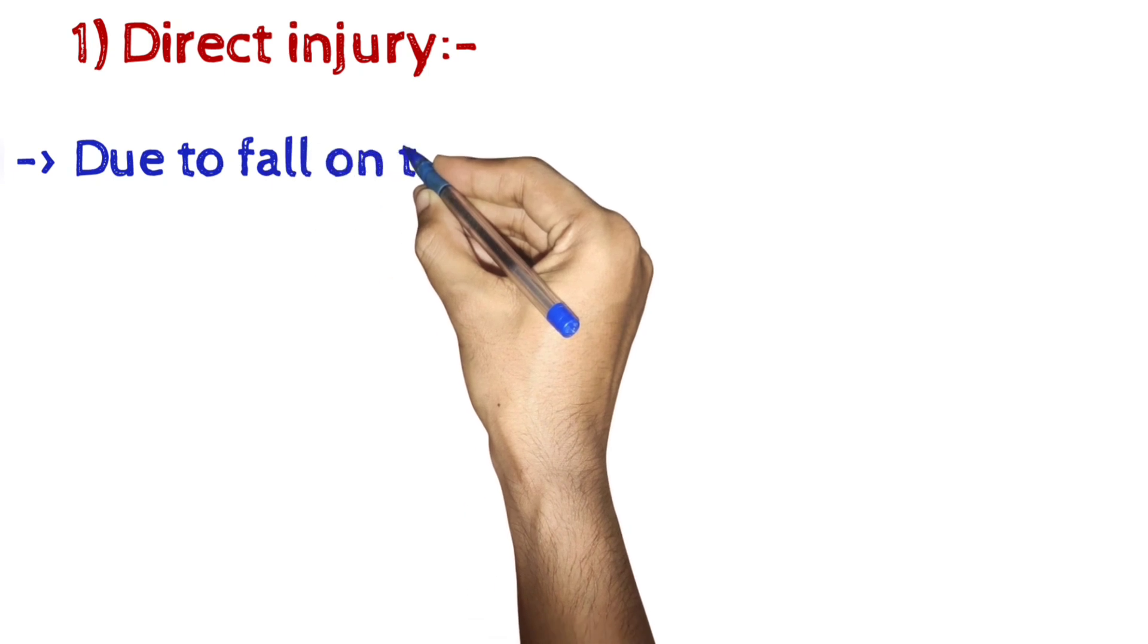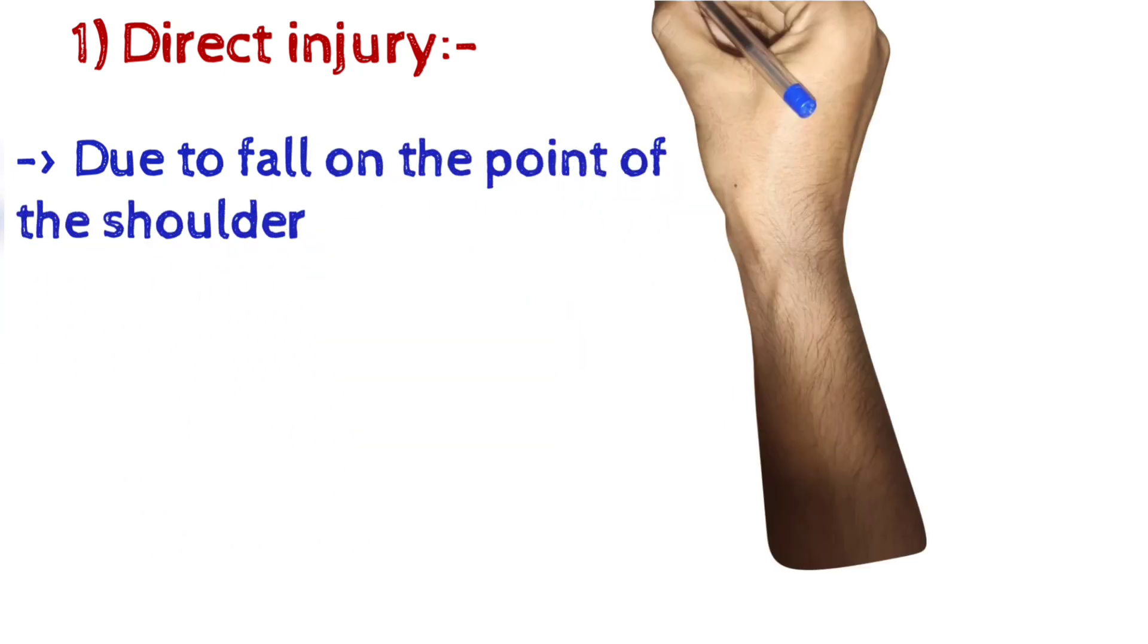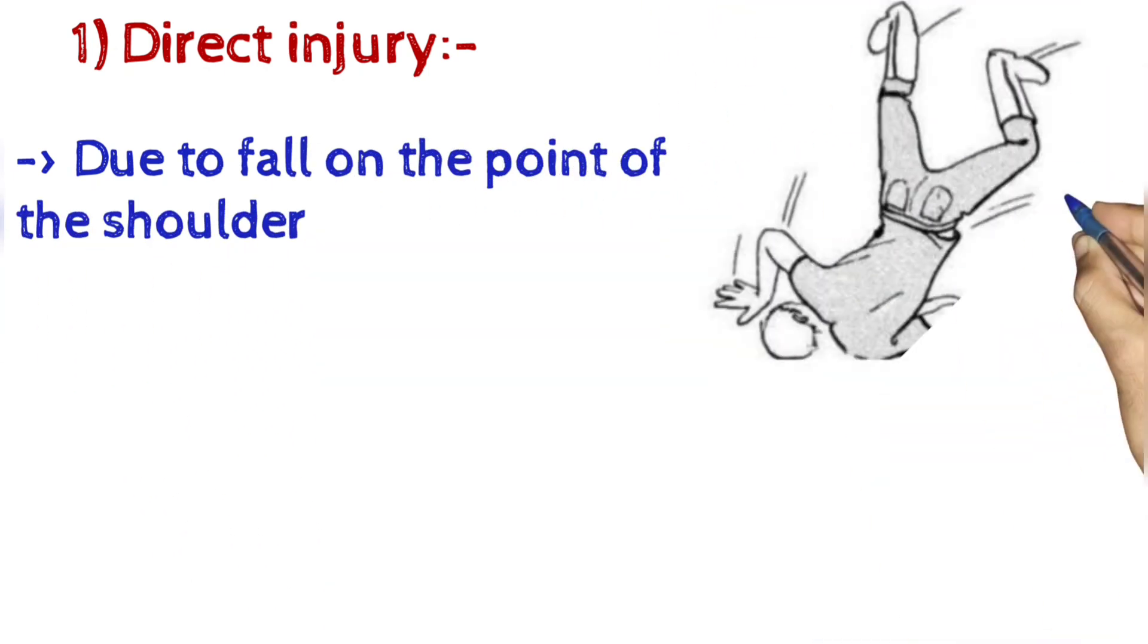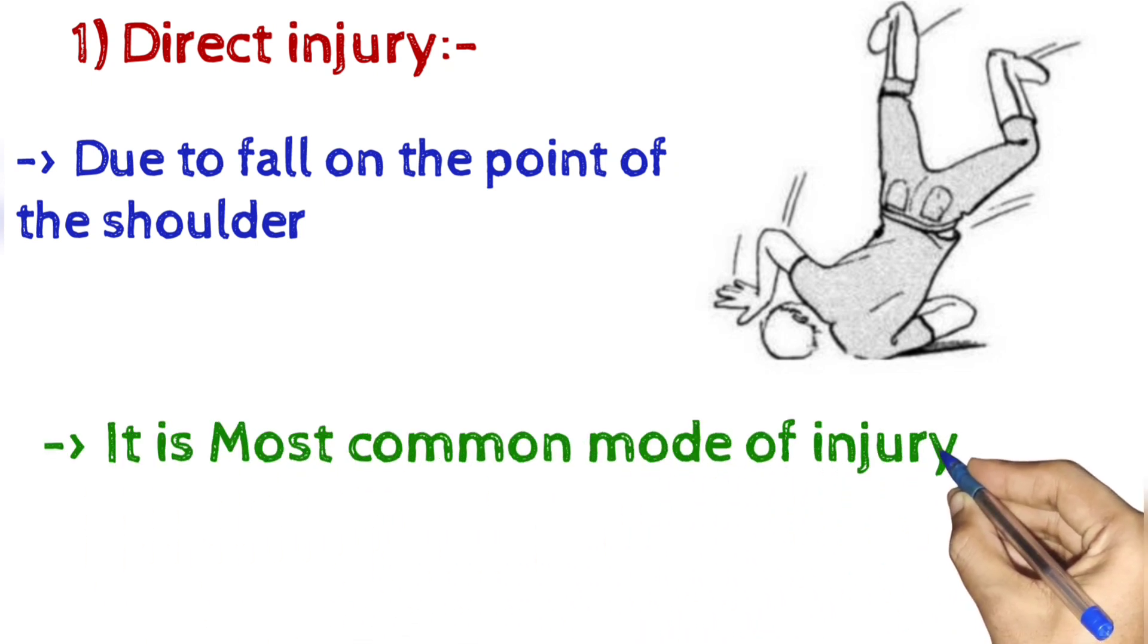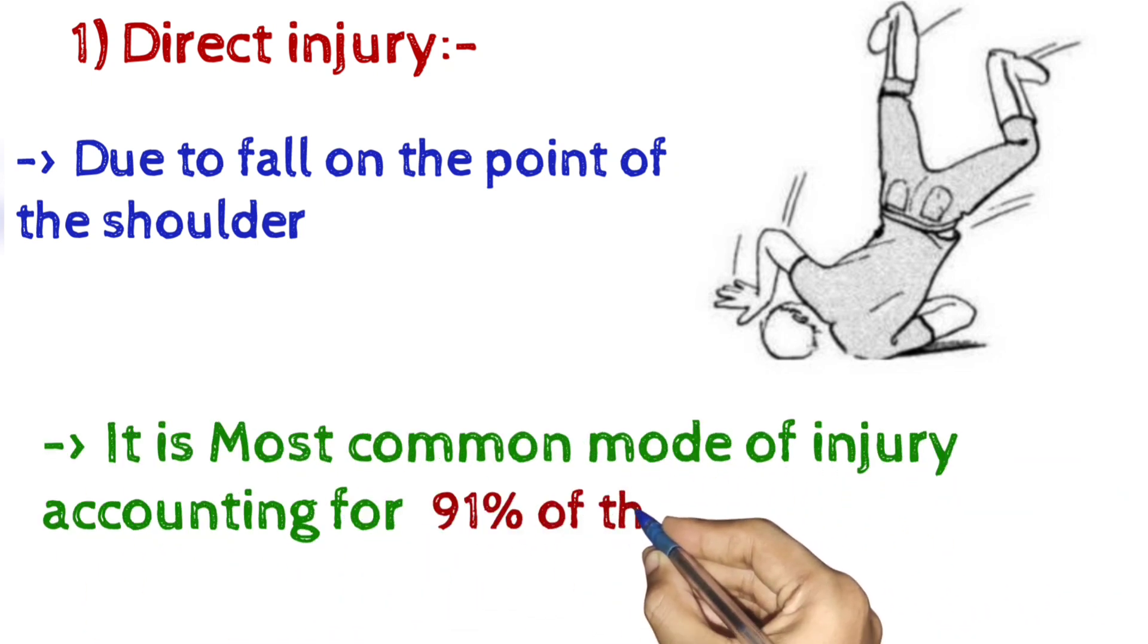Mechanism of injury: 1. Direct injury due to fall on the point of the shoulder. It is the most common mode of injury, accounting for 91% of the cases.